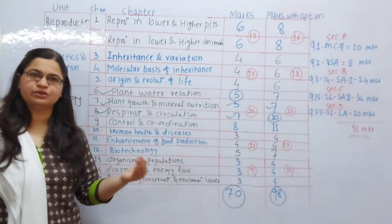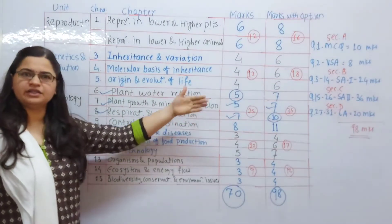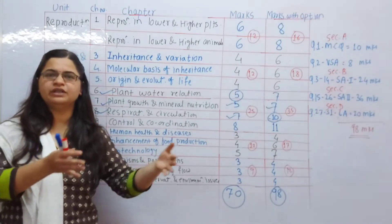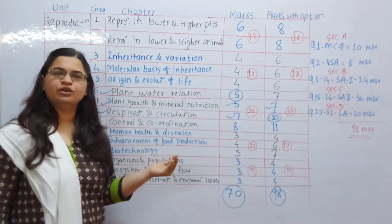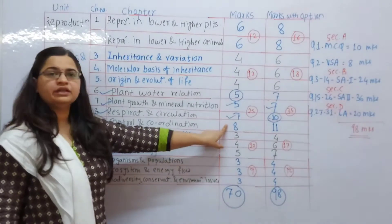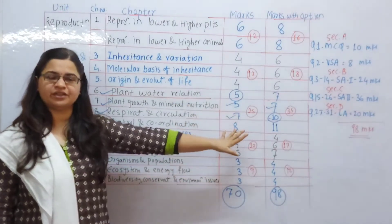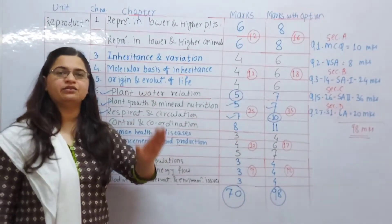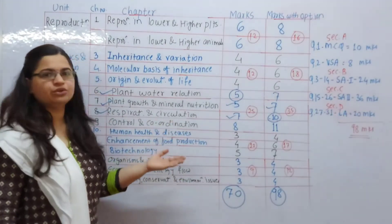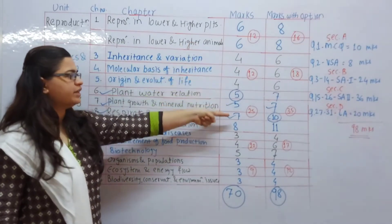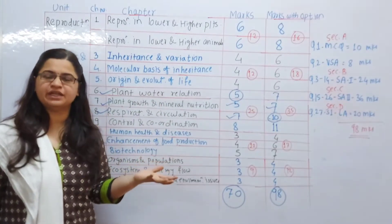There is also Respiration and Circulation. When we discuss important questions, I will tell you how to focus on which questions. Control and Coordination — the brain chapter — is 8 marks without options and 11 marks with options. Unit 3 total is 25 marks without options and 35 marks with options. You have to decide which chapters to go with. Out of 70 marks, you could target 49 marks from this unit alone.